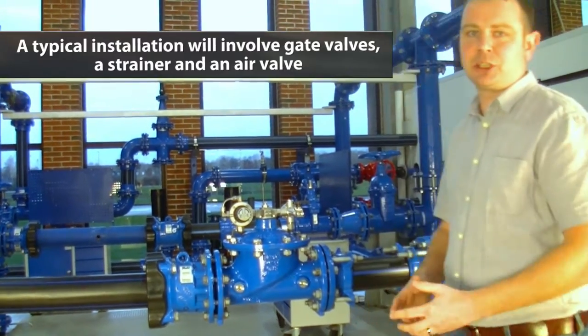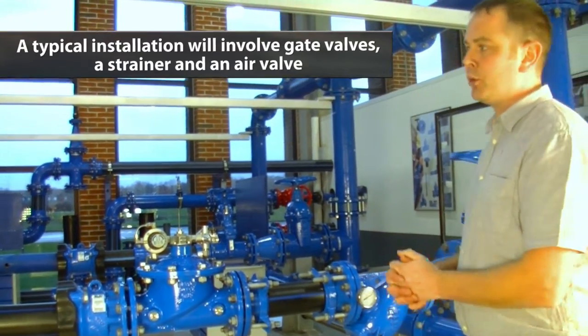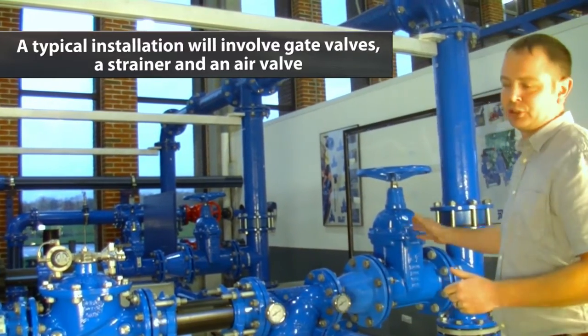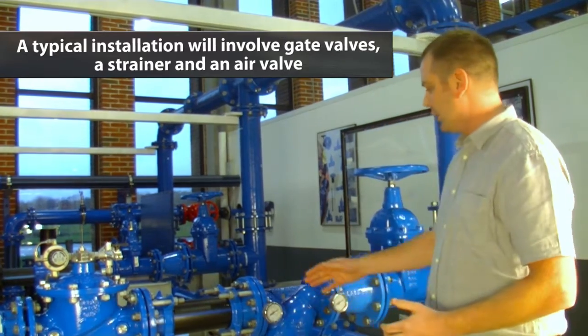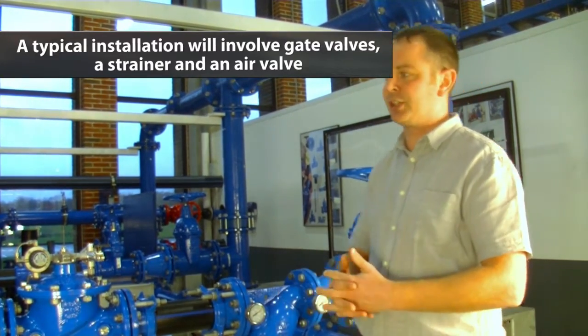The typical installation, particularly of a PRV, would involve isolation valves on site to enable major servicing and maintenance beside the valve body, a strainer, and in most cases an air valve as well.